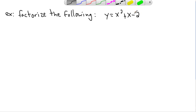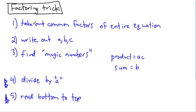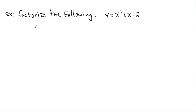Let's look at this example and see if there are any common factors. Well, we have 1x² + 1x - 2, and there are no common numbers except for 1, so this first step is done — there was nothing to do. The next step is to look at and write out what a, b, and c are. Remember the a, b, and c values should not have x's in them — we're just talking about the numbers in front of x², the number in front of x, and the constant.